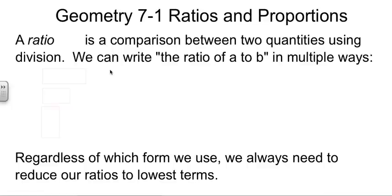Now the way we write these things, the ratio of a to b, we can write it as a to b with the word 2 in there. Or we can write it as a to b with a colon in there, but it's still read a to b. Or we can write it as a fraction a over b.